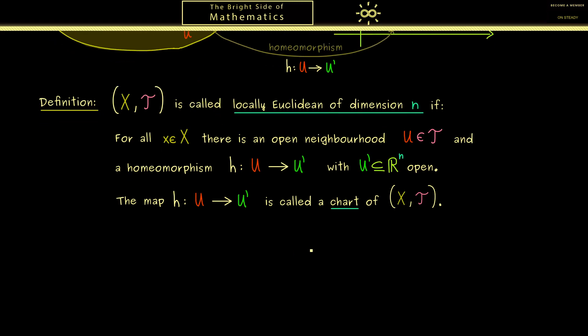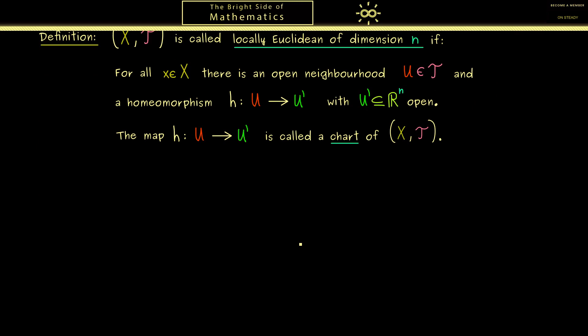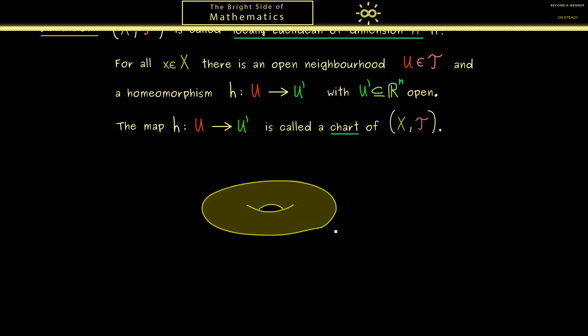Also here I want to take a donut again for the visualization. However, please don't forget this just represents the abstract concept here. So you already know locally we can describe the space. In other words, with a map h we find coordinates. They are just given in the common space R^n.